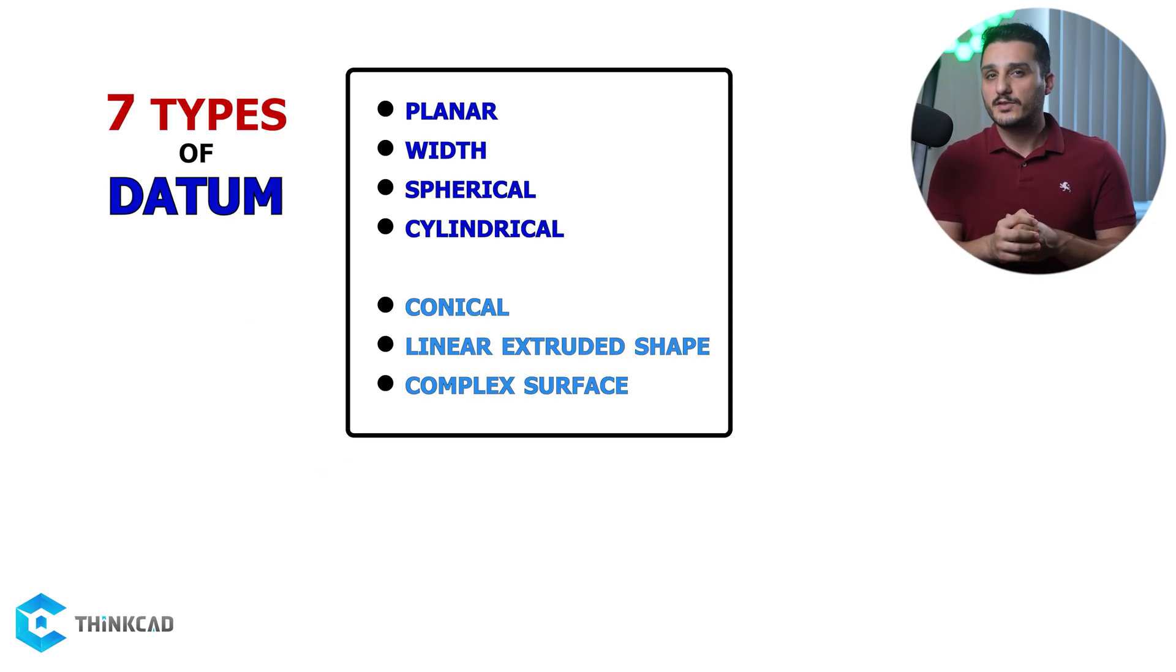Now there are seven different types of datums which you will learn about in the datum chapter. We have planar, width, spherical, cylindrical, conical, linear extruded shape, and complex datums.